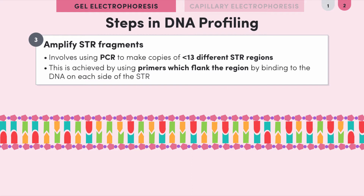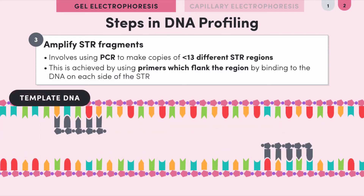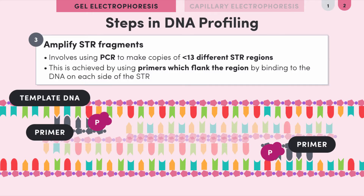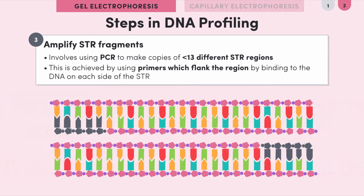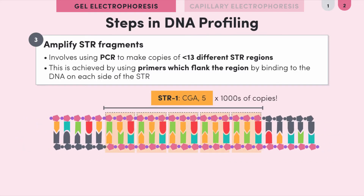Making a profile with 13 STRs might be a little complicated, so to get our heads around it we'll just analyze one STR — the one with the five CGA repeats we were looking at earlier. The way we ensure we just amplify the STR is by using primers which specifically bind the DNA on each side of the STR. DNA polymerase binds to the primers and synthesizes copies of the fragments, so if we perform the PCR reaction for long enough we end up with thousands of copies.